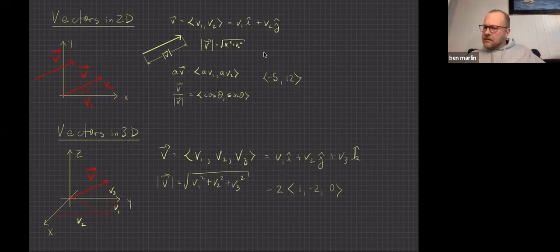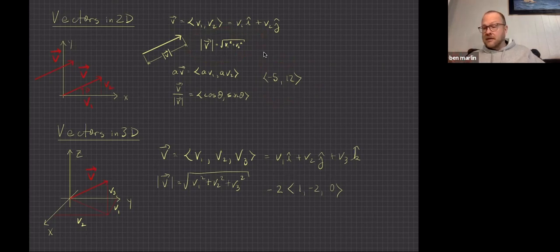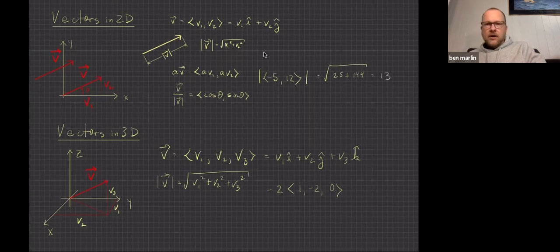So here we've got the vector negative 5, 12. The magnitude of a vector is the square root of the sum of the squares — you cannot distribute the square root. So the magnitude of negative 5, 12 is the square root of negative 5 squared plus 12 squared, which is the square root of 25 plus 144, the square root of 169, which turns out to be 13.